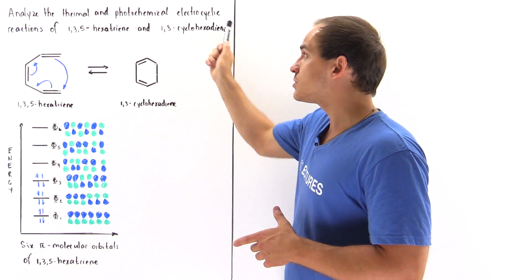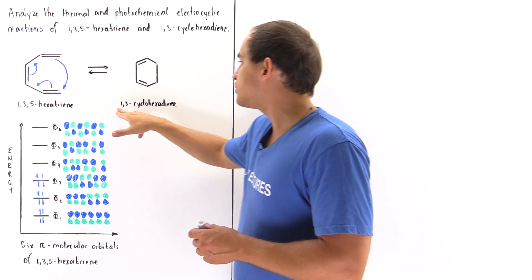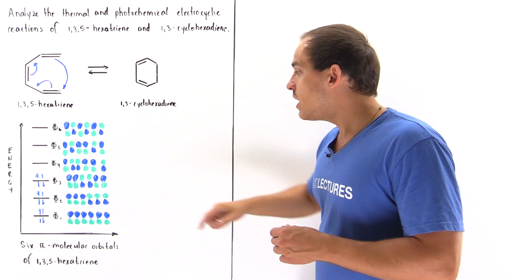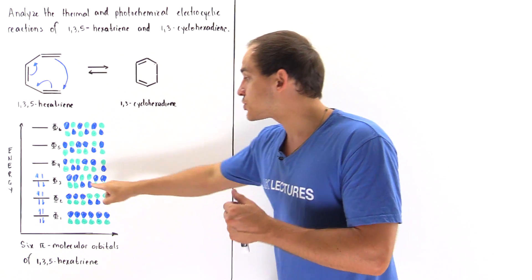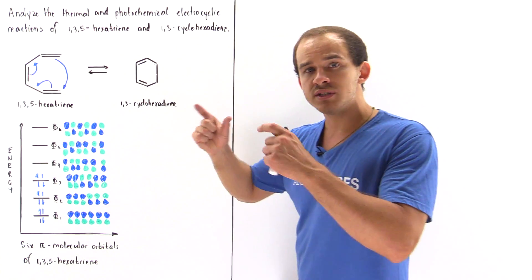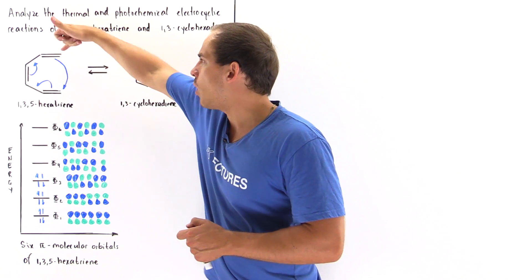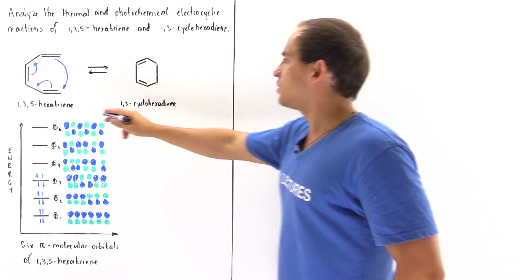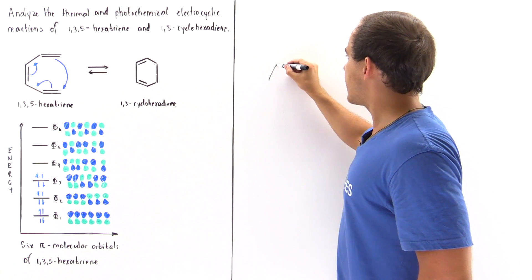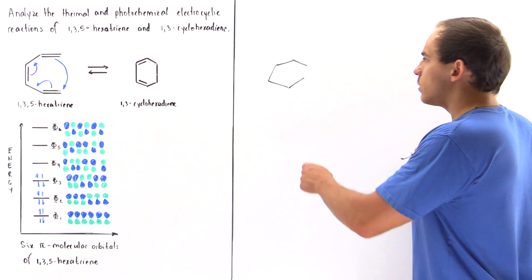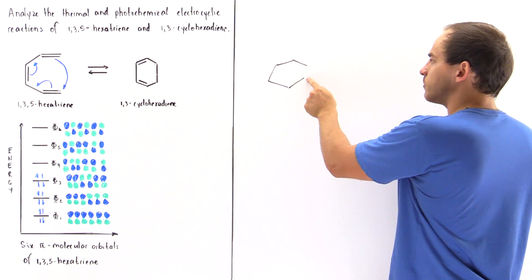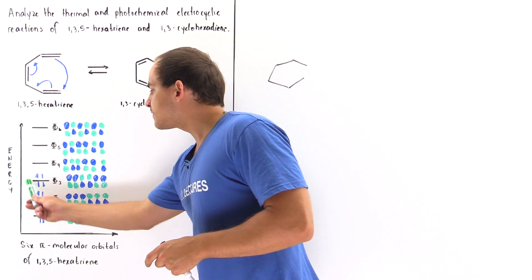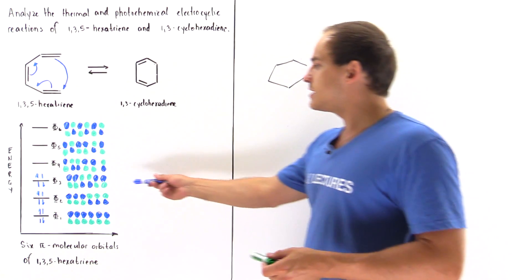For the thermal electrocyclic reaction from 1,3,5-hexatriene to 1,3-cyclohexadiene, the orbital that governs the rotation is φ3, the HOMO. We want to examine how the terminal orbitals at carbon 1 and carbon 6 of φ3 rotate to form the sigma bond. Let's draw the molecule 1,3,5-hexatriene and label carbons 1 through 6. Because we are dealing with the thermal case, we're looking at φ3.